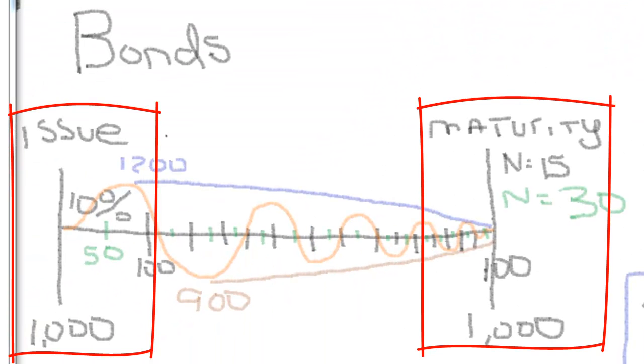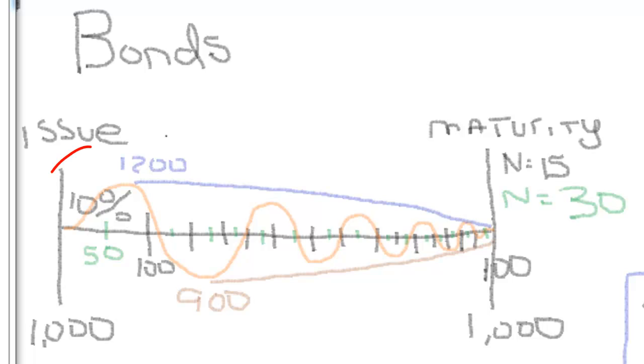Now bonds have an issue date and a maturity date, at which time the bond has a face value of $1,000. Bonds have a fixed coupon or interest payment. I'm going to use 10%. If I multiply the 10% and the $1,000, we get our payment of $100. The payment is generally paid twice a year, therefore semi-annual payment would be $50.